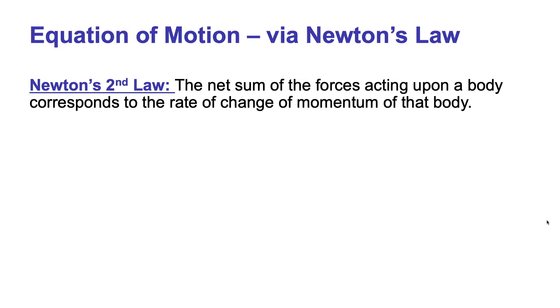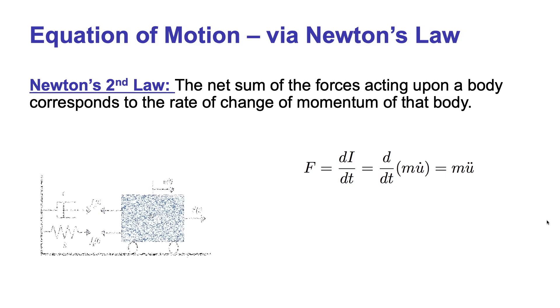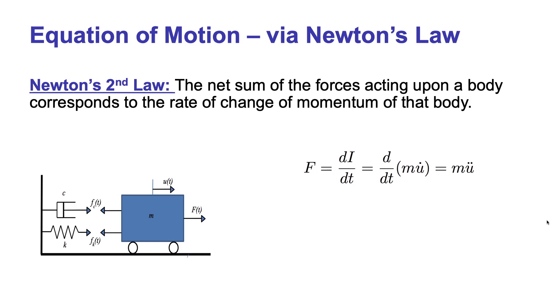Let's start with Newton's second law, which states that the net sum of the forces acting upon a body corresponds to the rate of change of momentum of that body. Expressing the rate of change of momentum by the differential of I over t and realizing that the momentum is mass times velocity and that for most civil engineering problems the mass of the system will remain constant, then the net sum of forces acting upon a body, which we call F, will be equal to mass times acceleration. We are using here the dot notation to represent differentiation with respect to time.